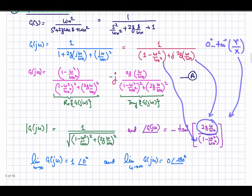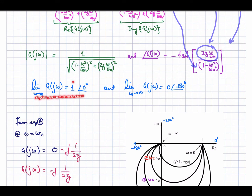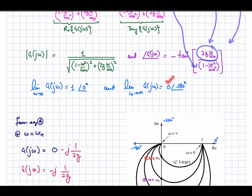When omega approaches 0, the magnitude approaches 1 because both the squared term and the 2*zeta term go to zero, giving 1/1. The phase is arctan(0) = 0 degrees. As omega approaches infinity, the magnitude approaches 0 and the phase approaches minus 180 degrees.